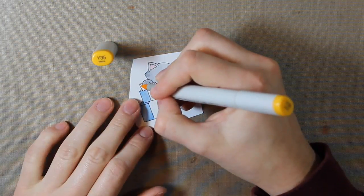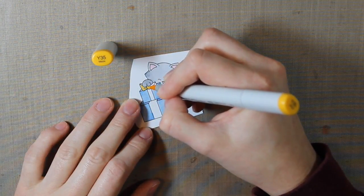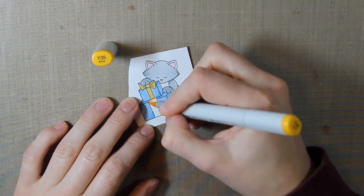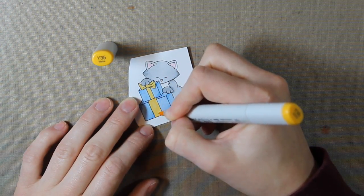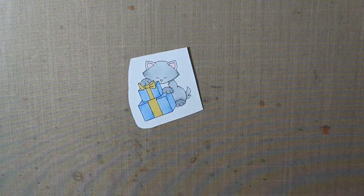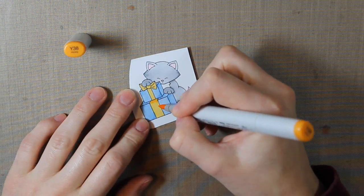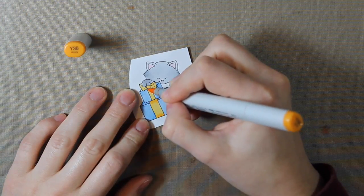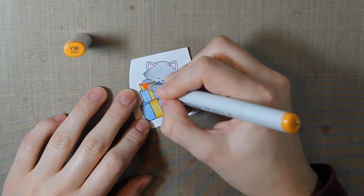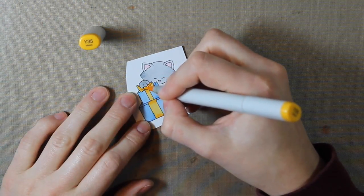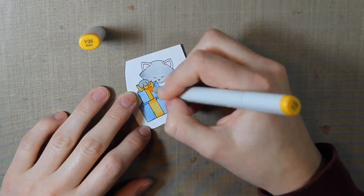And then for the bow, I'm coloring this in with the Y35, which is kind of more of a golden yellow. And it really matches that fossilized amber that we used in the background. And then for my darker color, I'm using the Y38. And then I'll take that Y35 once again and blend both of those colors together.